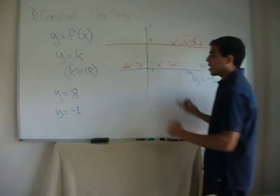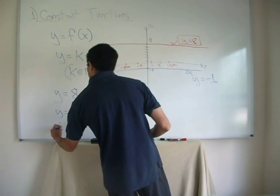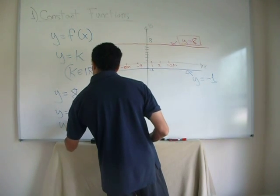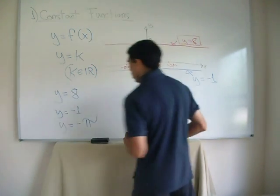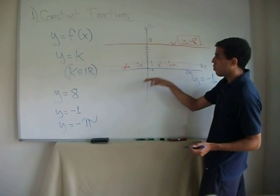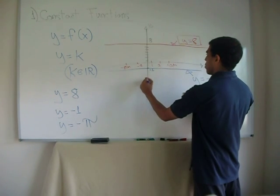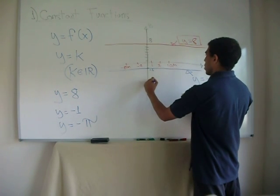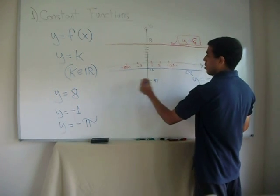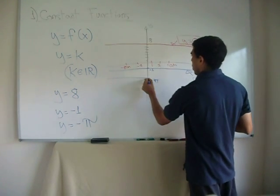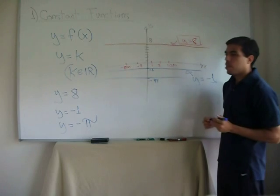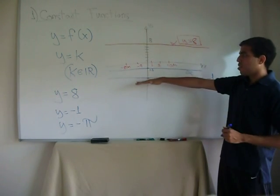It can be anything. It can be y equals minus pi. And in that case, we would have to calculate minus pi, which probably would be around here, and the value of the function, exactly the same forever, minus pi, is the horizontal line.